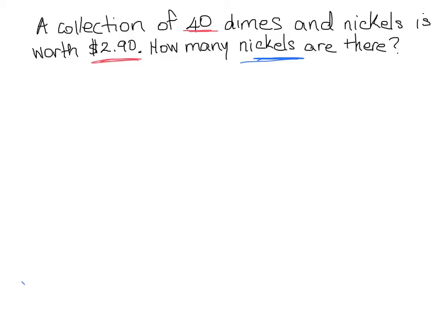So we need to pick out a variable. The question is about nickels and dimes, so we can use either one, but since the question is asking us specifically about nickels I am going to choose to use nickels as my variable. And conveniently it starts with n, so I'm going to use n. I don't have to, I could use x, I could use p, I could use anything I want, but I'll use n.